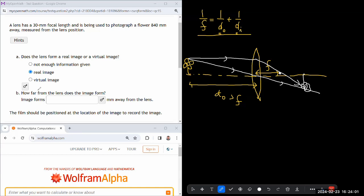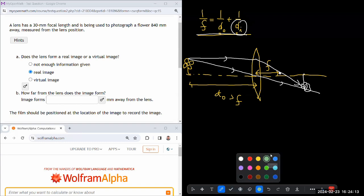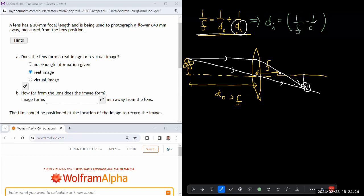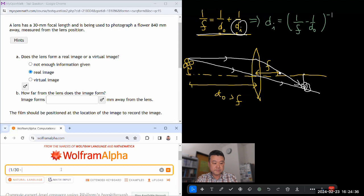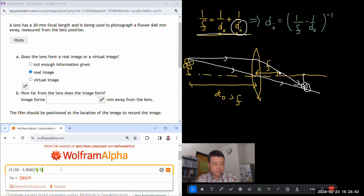So how far from the lens does the image form? I need to take this equation and solve it for the image distance. DI is going to be the reciprocal of 1 over F minus 1 over DO. So image forms, 1 over focal length 30 millimeters minus 1 over object distance 840 millimeters, reciprocal of that.